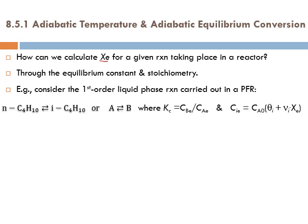The example is the conversion of normal butane to isobutane, or A goes to B reversibly, where Kc equals the concentration of B at equilibrium divided by the concentration of A at equilibrium. Using the stoichiometry for this liquid-phase reaction, we arrive at a specific expression for Xe.